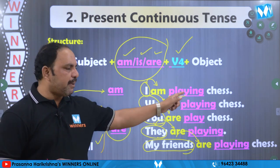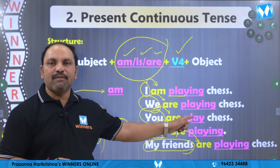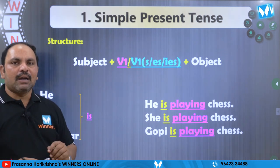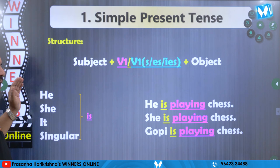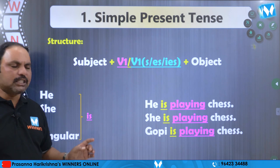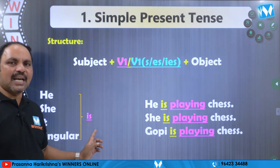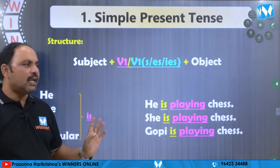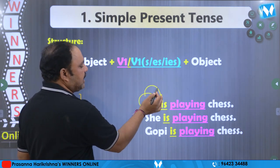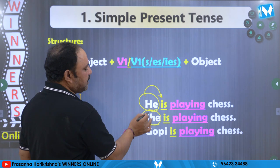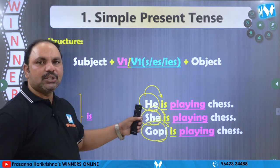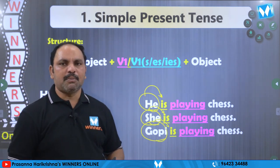E am is are tharavata playing ane tete verb unni undikabatti V4 ochina apadu gamaninchandi. Is ekada vaadhaali ane: subject ga naka 'he', 'she', 'it' singular. He, she, it singular ane tete subject ochina apadu 'is' ane tete verb ni upayoginchandi. Udaharanakki: He is playing chess. She is playing chess. Gopi is playing chess. He, she, it singular ochina apadu is ni vaadhunaamu.